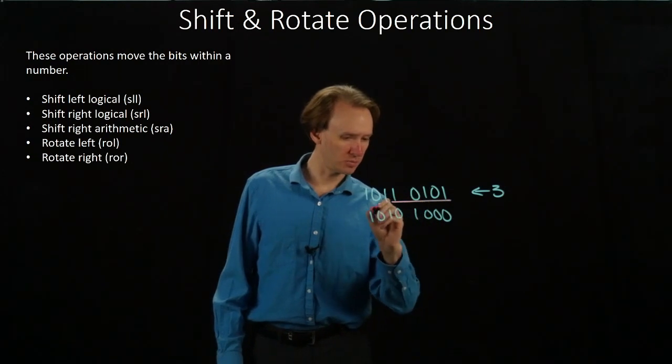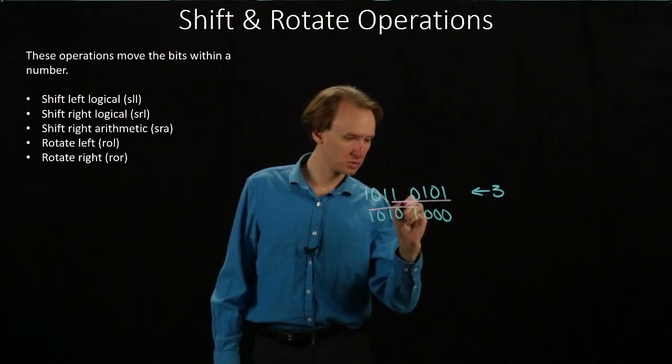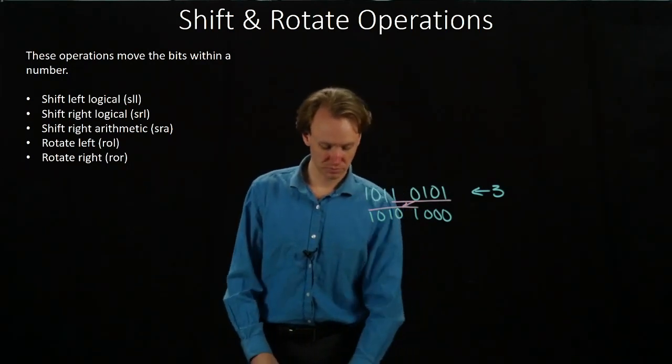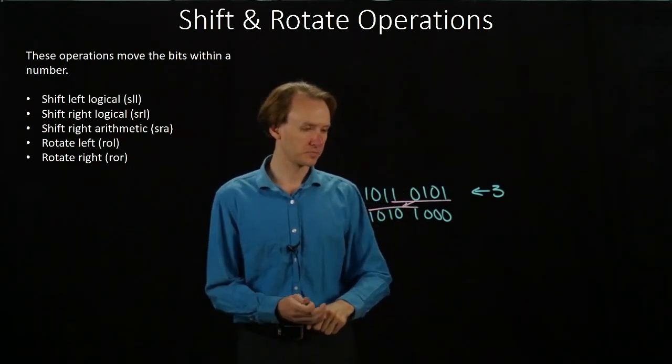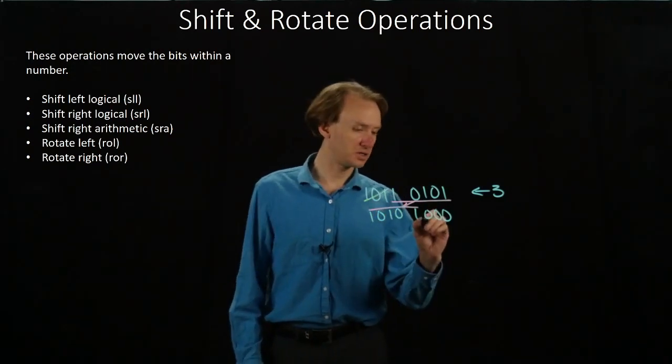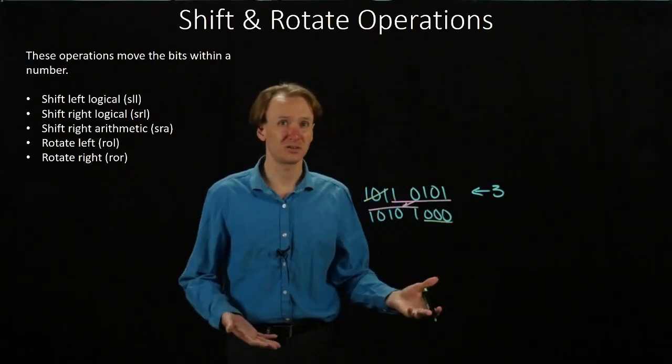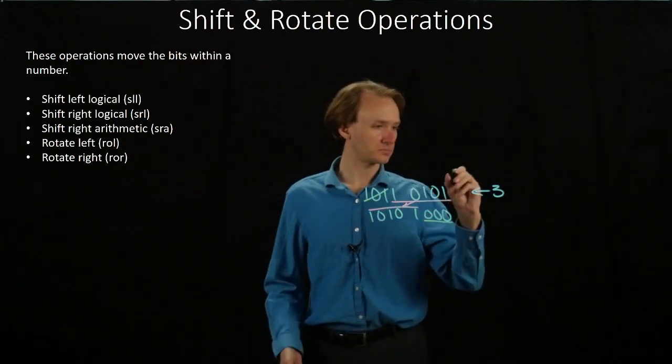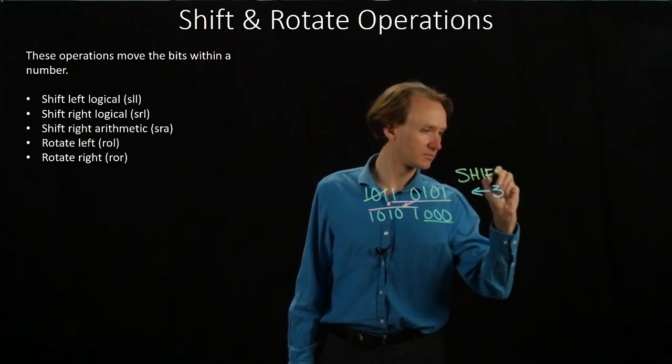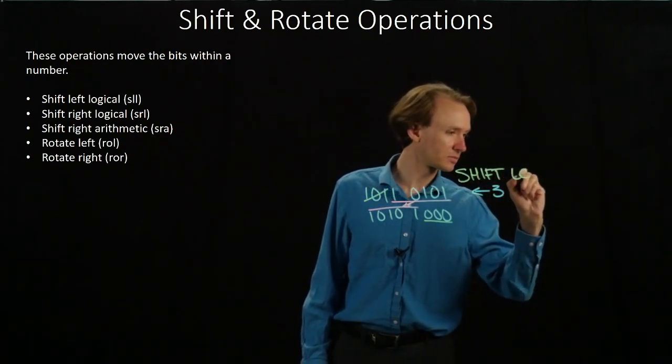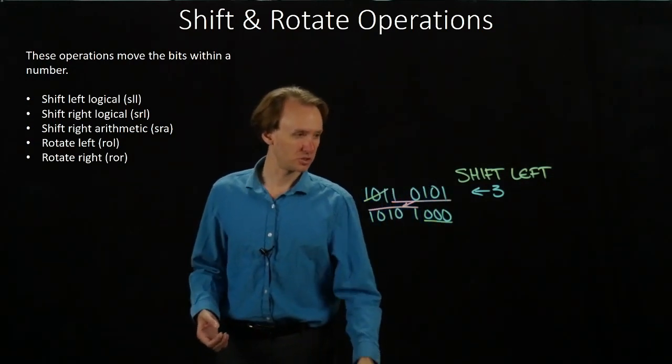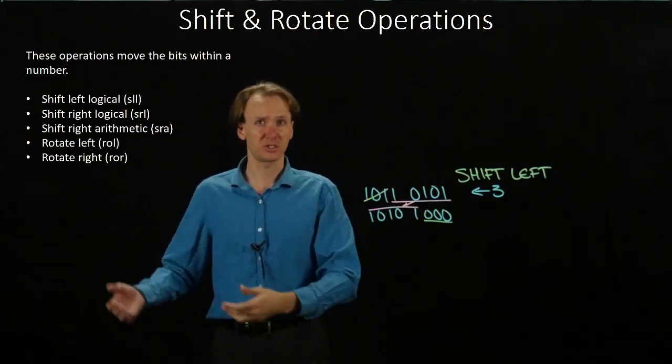So this part of my number got shifted left. This part of the number, the most significant three bits fell off, and instead I added in three zeros on the right-hand side. So that's what shifting left will do. If you do this with a 32-bit number, you just have more bits to shift.